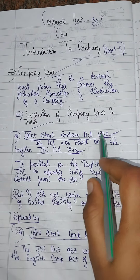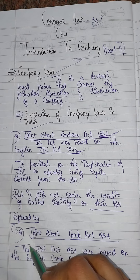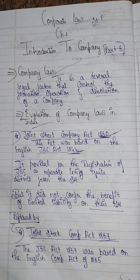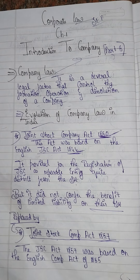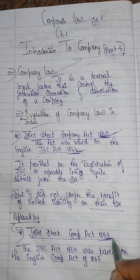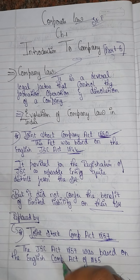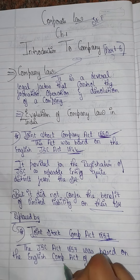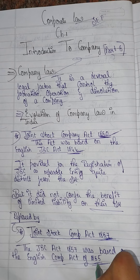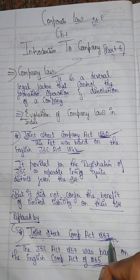The Joint Stock Companies Act 1850 was then replaced by the Joint Stock Companies Act 1857. The Joint Stock Companies Act 1857 was based on the English Companies Act 1855. So the English Companies Act 1855 is the basis of the 1857 Act.